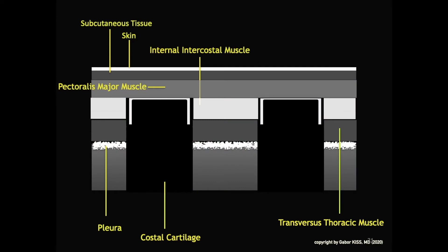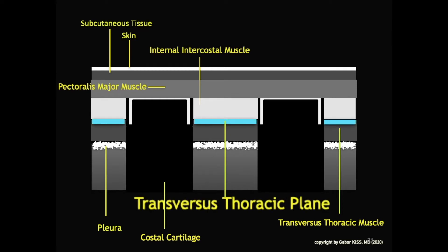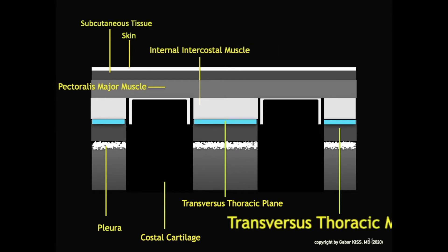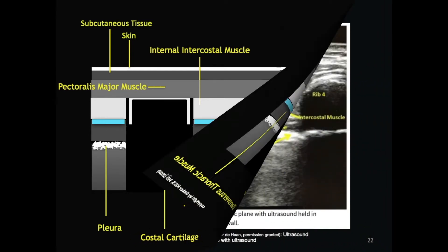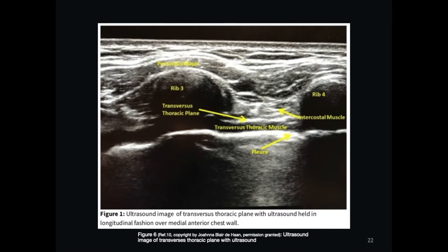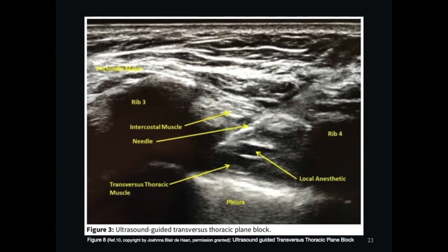On this ultrasound image we will recognize the same structures as in the previous cartoon. The transverse thoracic plane is located between the internal intercostal muscle and the transverse thoracic muscle, with underneath the pleura. In ultrasound imaging, costal cartilage is displayed as a black shadow. On this longitudinal ultrasound real image, one can see the anatomy of the transverse thoracic plane block before injection. The transverse thoracic muscle is identified as a hypoechoic band that overlies the pleura. This is the ultrasound image during injection of local anesthesia into the transverse thoracic plane, with spread between the internal intercostal muscle and the transverse thoracic muscle.